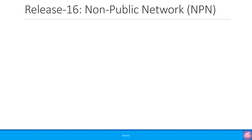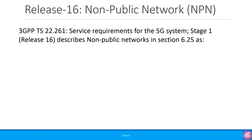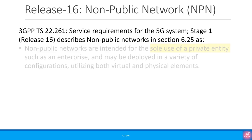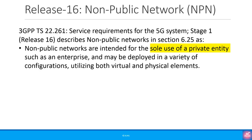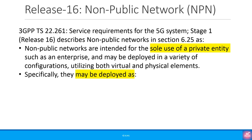Let's try to understand what we mean by non-public networks. The 3GPP technical specification 22.261 describes non-public networks as: networks intended for the sole use of a private entity such as an enterprise, and may be deployed in a variety of configurations utilizing both virtual and physical elements. When I say 'enterprise' going forward, it's a generic term covering venues, in-building, factories, etc. Non-public networks may be deployed as completely standalone networks, hosted by a PLMN, or offered as a slice of a PLMN — three main high-level approaches.